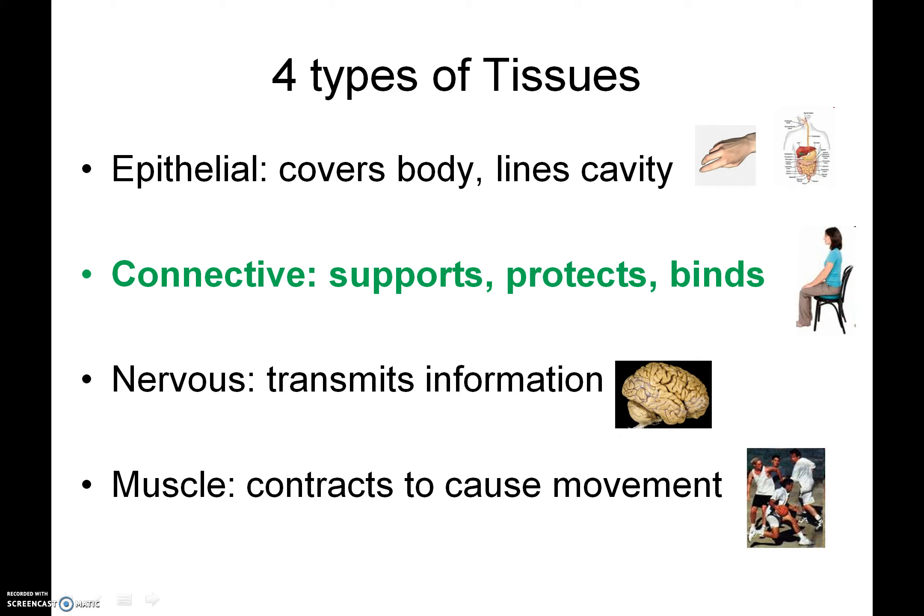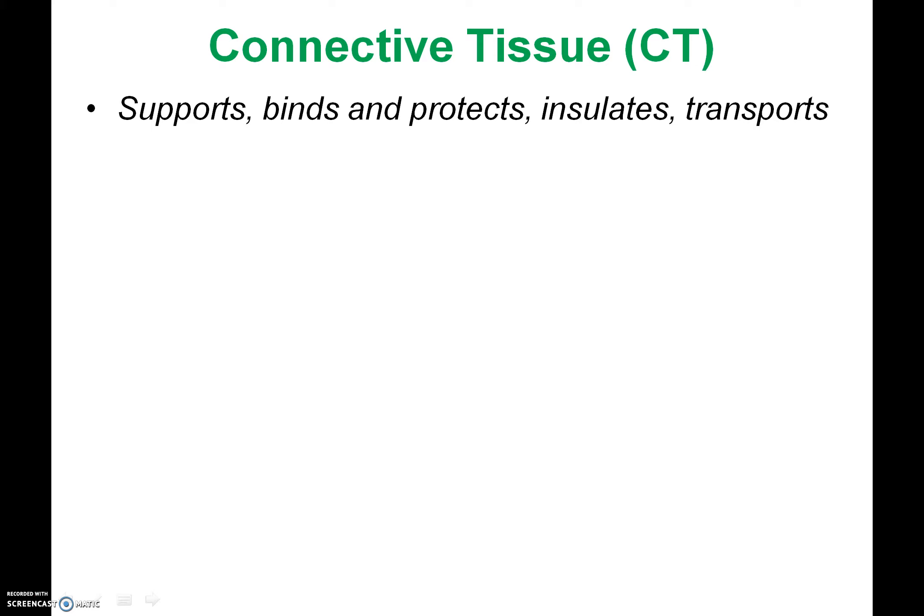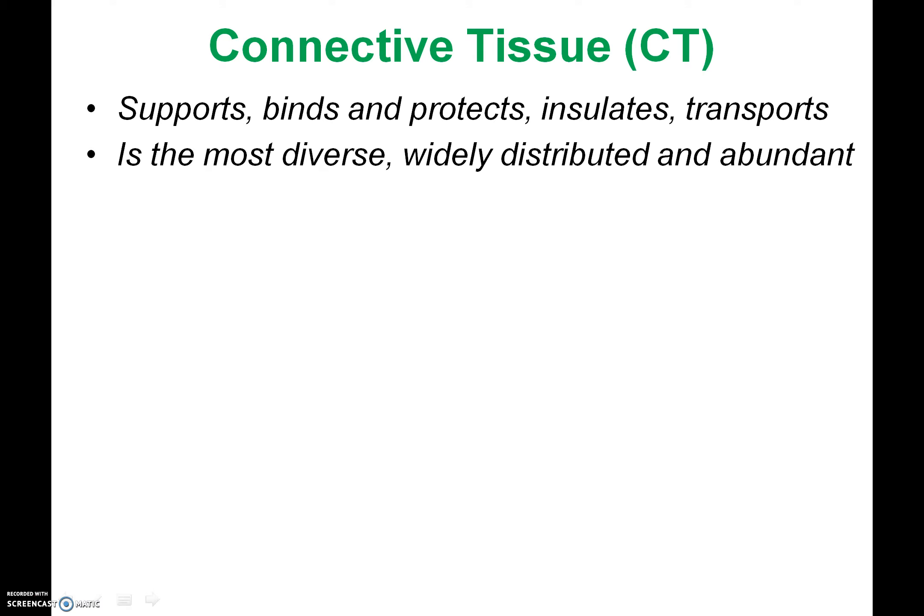Now we're going to discuss connective tissue. Connective tissue is your most diverse tissue category. It does a lot of different things such as support, protect, and bind. In addition to that, connective tissue can also insulate and transport material. It's the most diverse tissue type in your body and it's also widely distributed — meaning you can find it in all different parts of your body, and it's very abundant.